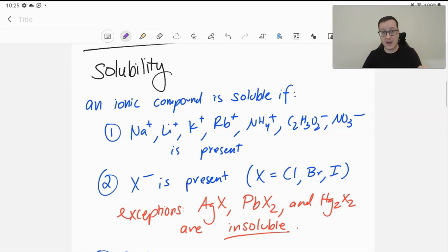If any of those ions is part of your ionic compound, it will be soluble. No matter what else you've got, silver nitrate, soluble; potassium carbonate, soluble; lithium sulfate, soluble; sodium bromide, soluble; ammonium acetate, soluble.